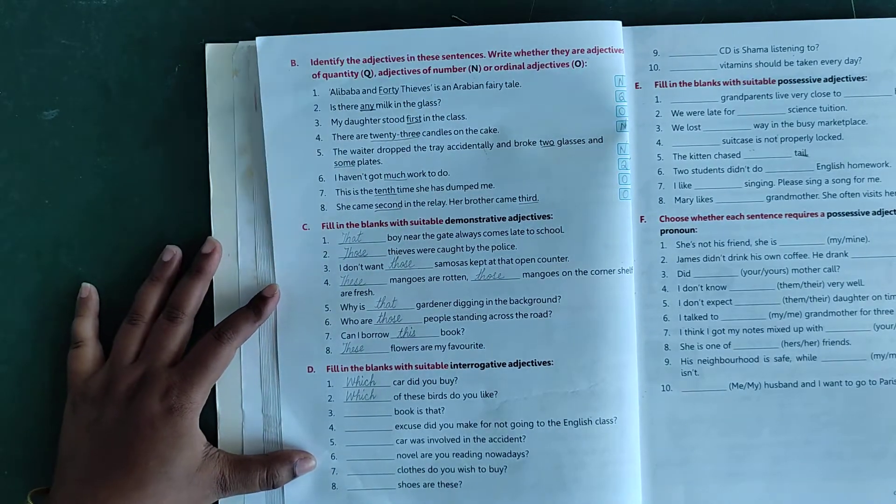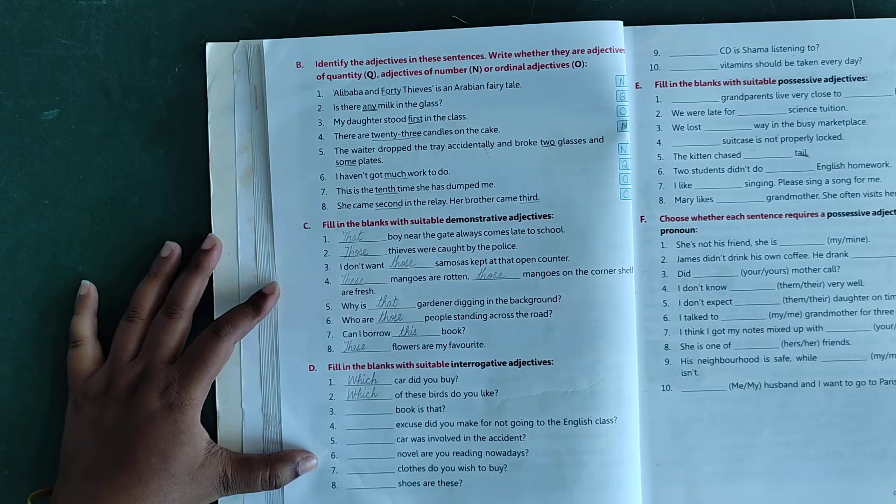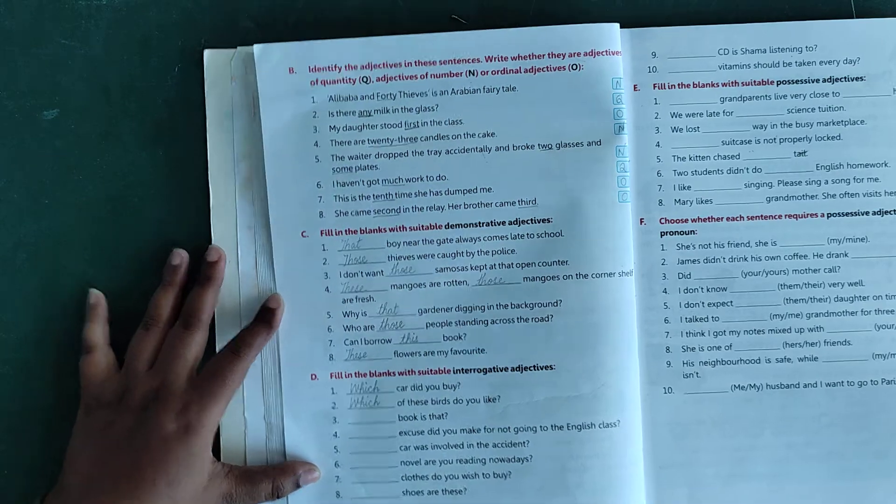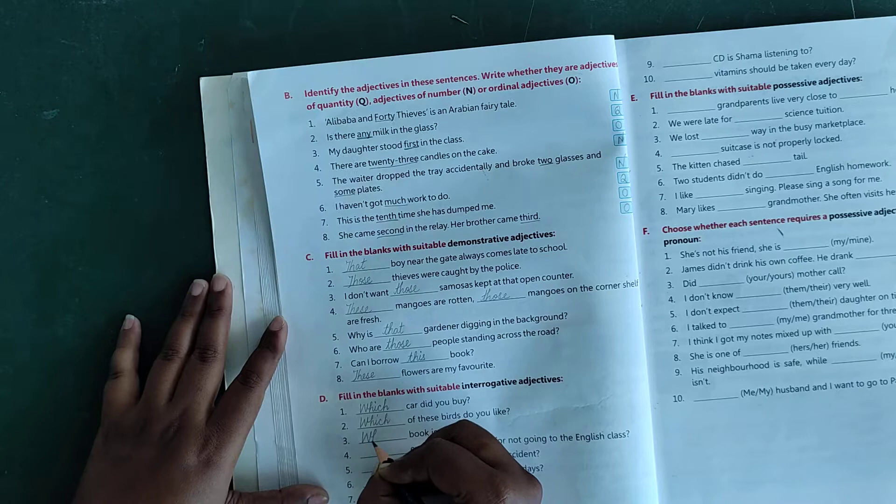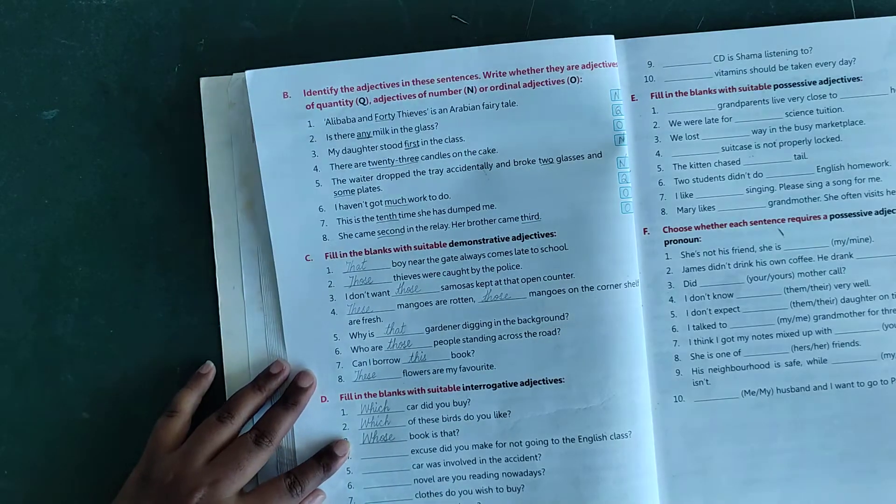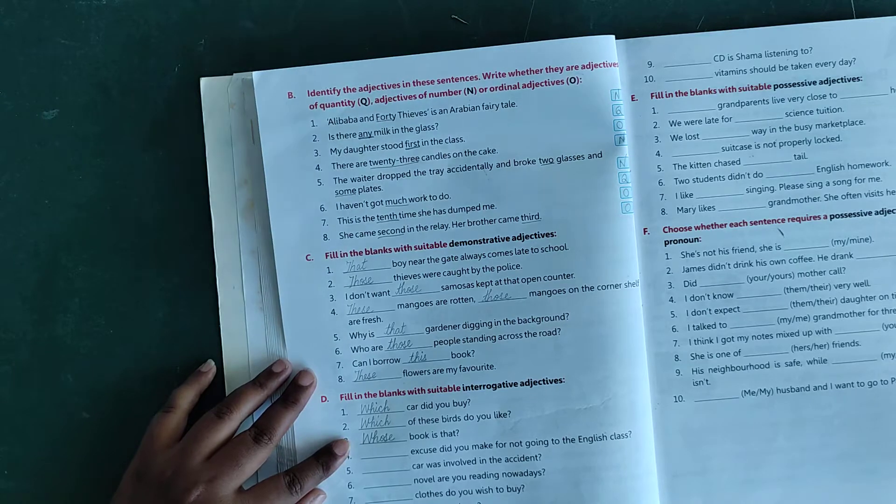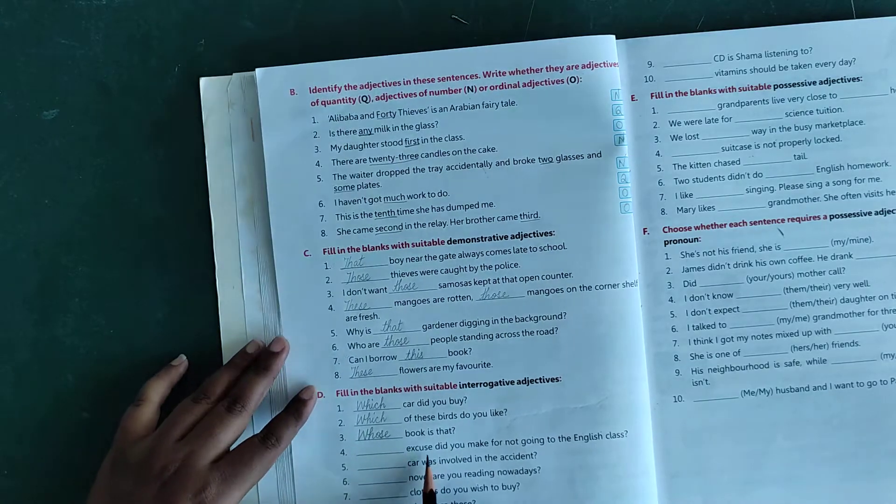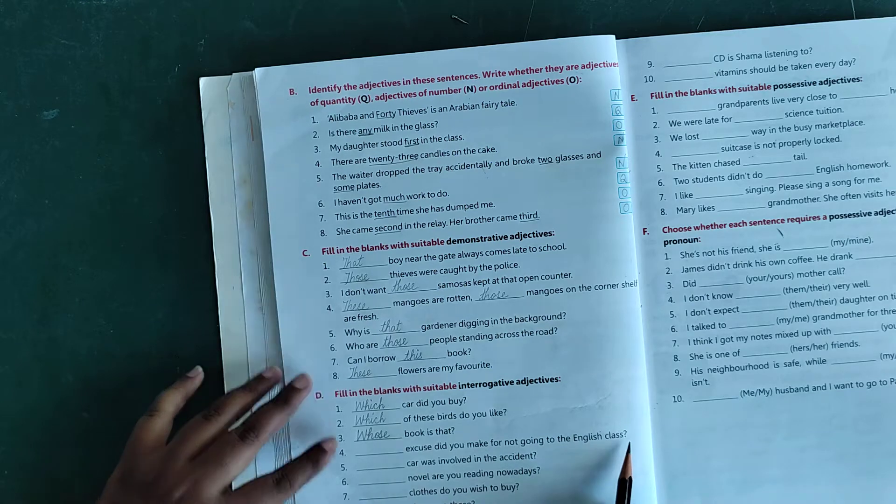Number 3: dash book is that? Whose book is that, whose book. W-H-O-S-E, whose book is that.